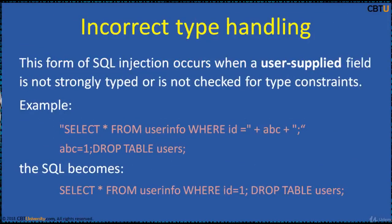Incorrect type handling occurs when a user-supplied field is not strongly typed or not checked for type constraints. This can occur when a numeric field is to be used in a SQL statement but the programmer makes no checks to validate that the user-supplied input is numeric. For example: SELECT * FROM userinfo WHERE id = abc. Here, id may be expected to be numeric, but if it is in fact a string, the end user may manipulate the statement as they choose, bypassing the need for escape characters. For example, setting the variable to 1; DROP TABLE users.